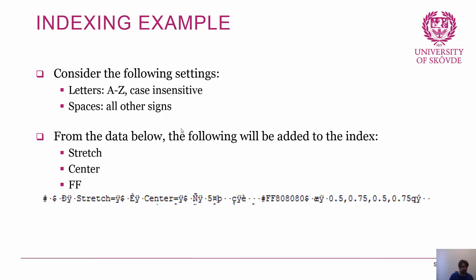Now let's make a modification: we also accept numbers as letters, while all other signs remain spaces. Now the result changes — a '5' in the middle will be added to the index, and looking at the 'ff808080' part, the entire string 'ff808080' will be added to the index because it is a consecutive string of what we now consider letters. We can consider any sign to be a letter — for instance, if we're working a case where we know the person has a tendency to use brackets in his passwords, we add brackets as a letter.